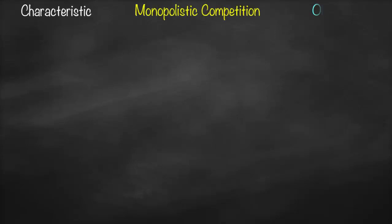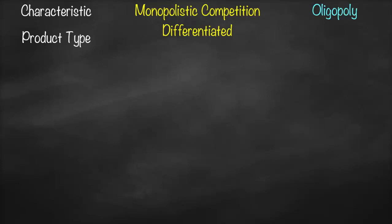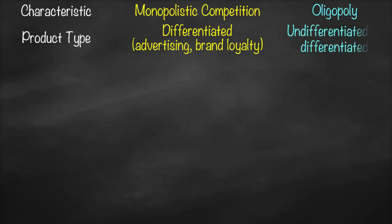This is a comparison between monopolistic competition and oligopoly. The product type under monopolistic competition is a differentiated product, which means the product has little differences in terms of color, size, and shape. Therefore, each company in monopolistic competition focuses mainly on advertising and brand loyalty in order to attract more customers.